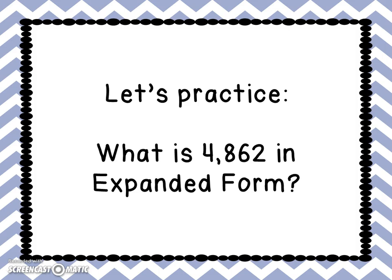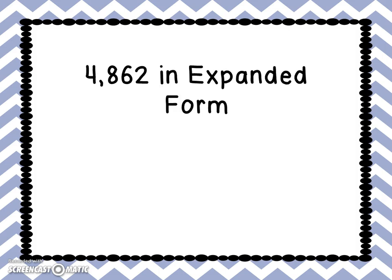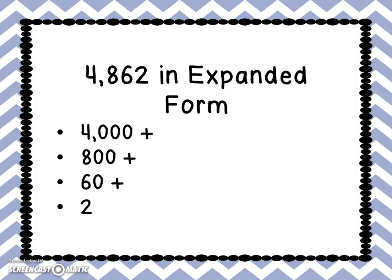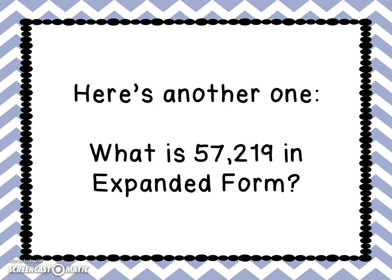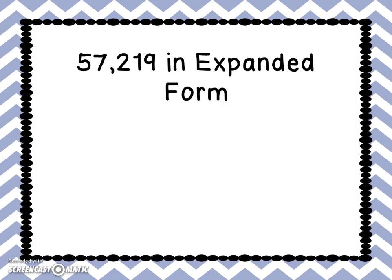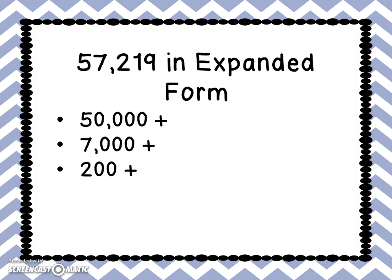Let's practice. What is 4,862 in expanded form? 4,862 in expanded form is 4,000 plus 800 plus 60 plus 2. Here's another one: what is 57,219 in expanded form? 57,219 in expanded form is 50,000 plus 7,000 plus 200 plus 10 plus 9.